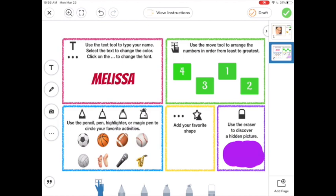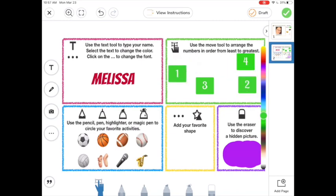Let's look at the move tool. Make sure to select the move icon down here at the bottom and we're going to move the numbers in order from least to greatest. I can first click on the item and then move it around as I need to.